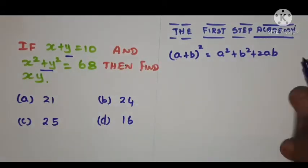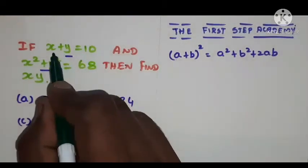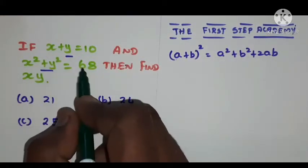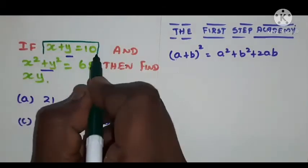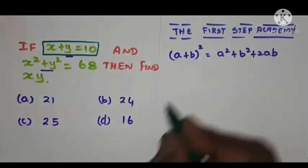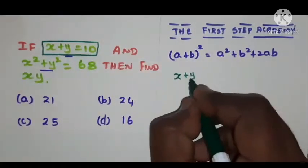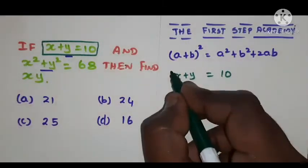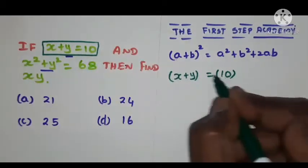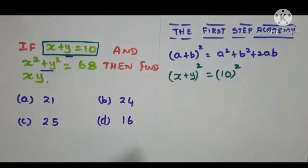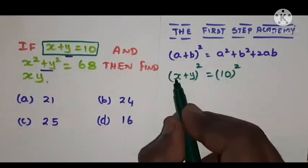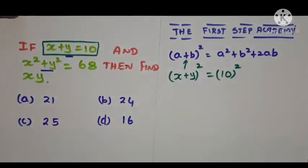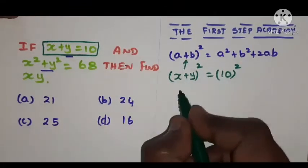Now, the two given values are x plus y equals 10 and x squared plus y squared equals 68. I'll take x plus y equals 10 and square both sides. On the left-hand side, x plus y whole squared exactly resembles (a + b)² — so we apply the formula here.